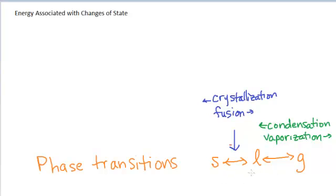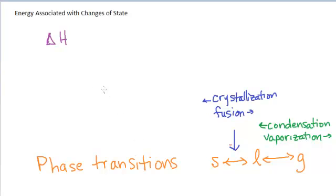Each of these phase transitions requires energy. To go from solid to liquid, you give energy to the particles, which keeps them close together but allows them to flow. To go from liquid to gas, you give energy to the particles to overcome intermolecular forces, allowing them to get far apart as in the gas phase. The amount of energy for each phase transition is an enthalpy change — a delta H — as long as you're at constant pressure.